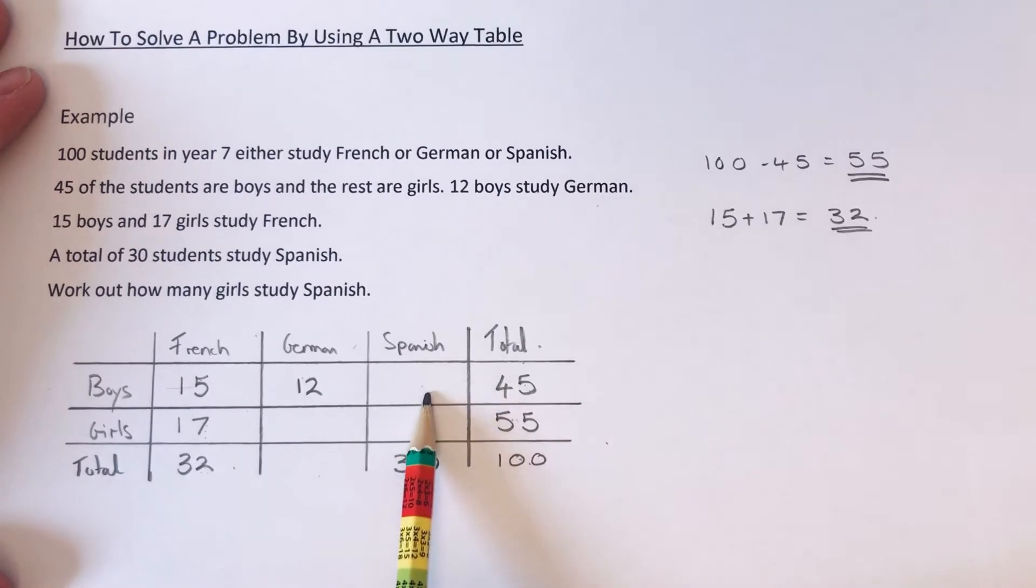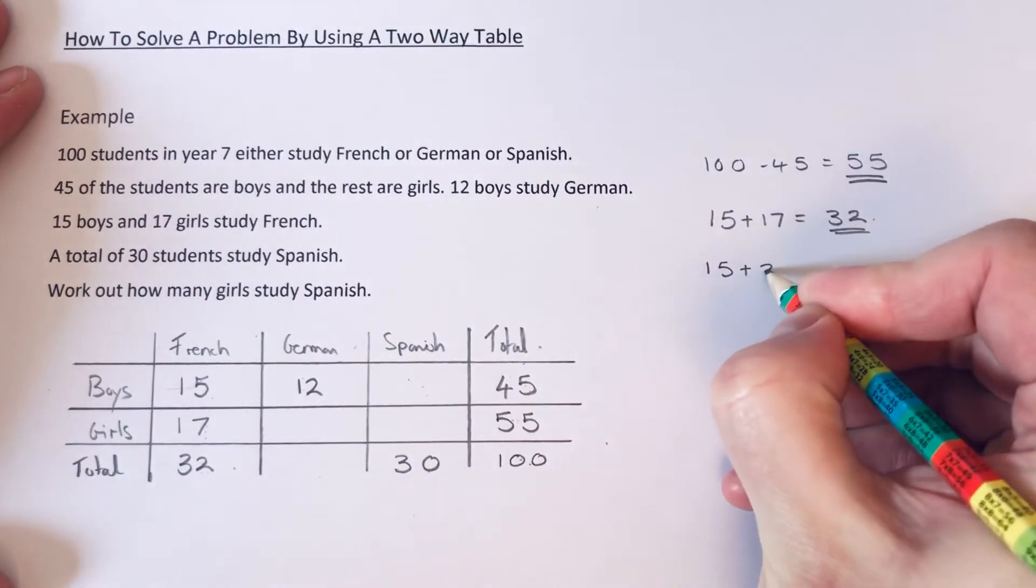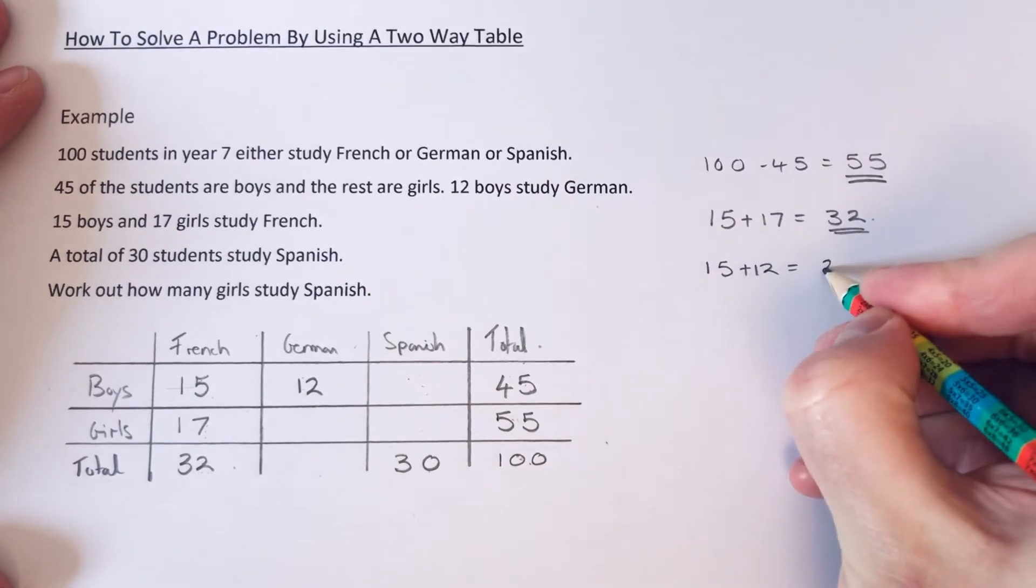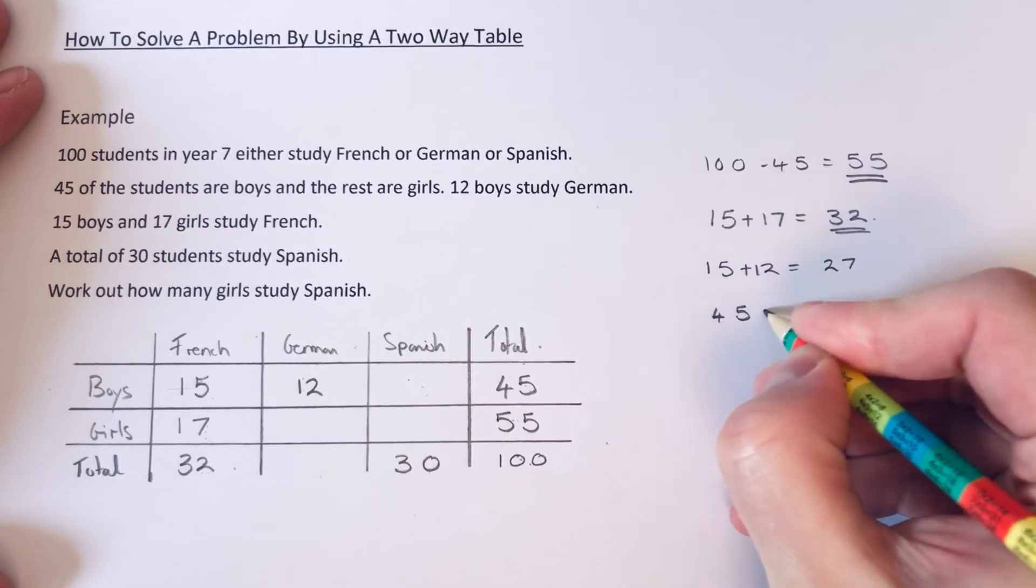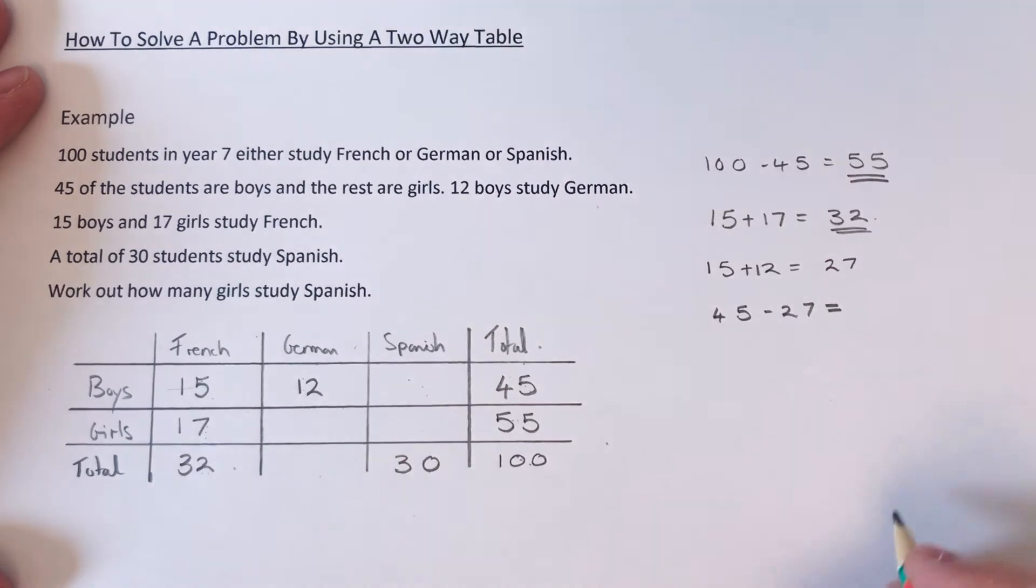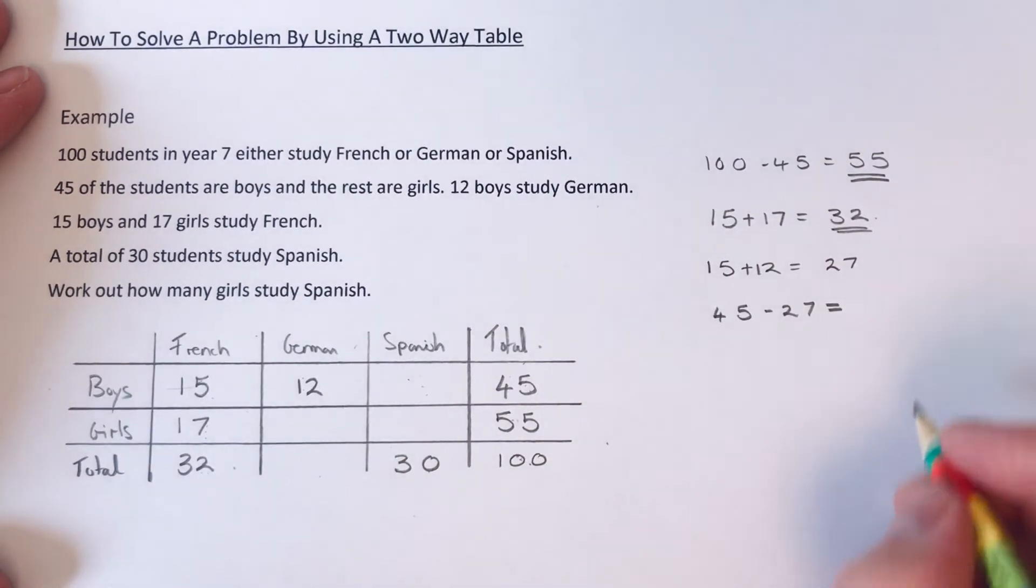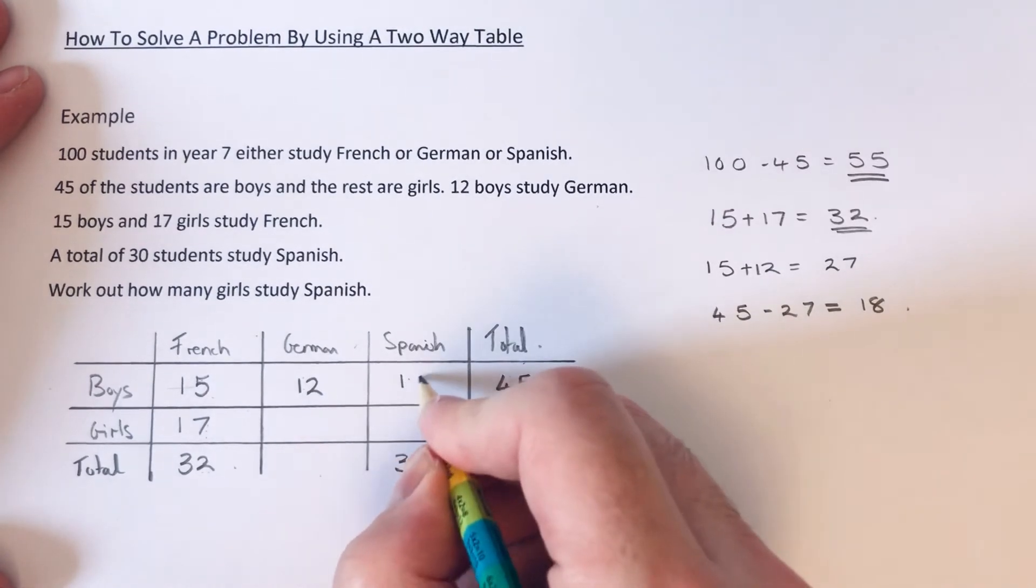So that goes there. And let's work out how many boys study Spanish then next. So these three would add up to 45. So if we add up 15 and 12 first of all, that's 27, and take that off the total for the row, which is 45. So 45 take away 27 would be 18.